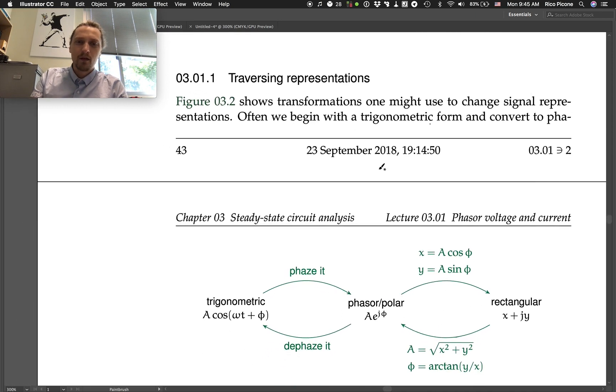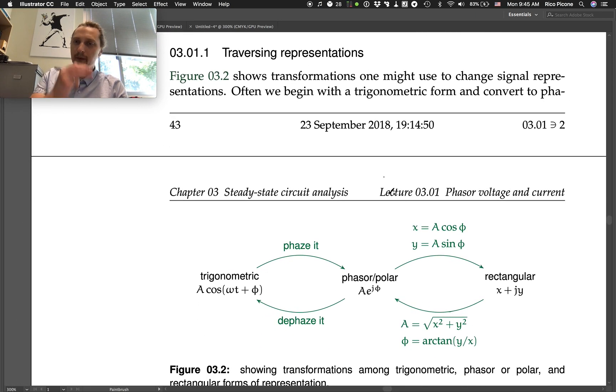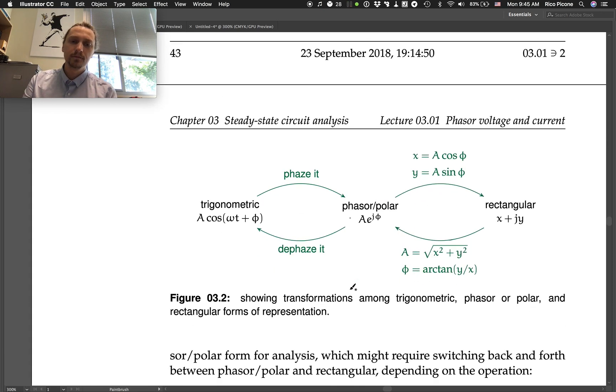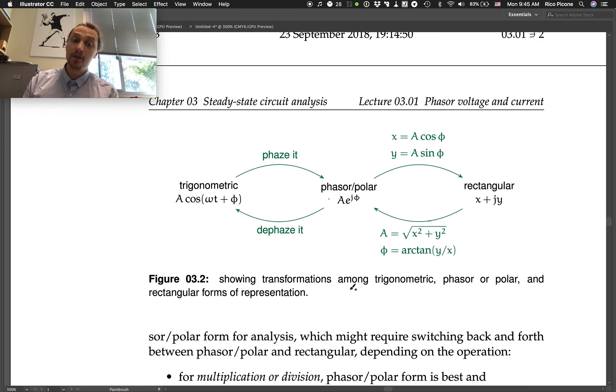Figure 3.2 shows transformations one might use to change signal representations. Often we begin with a trigonometric form and convert to a phasor form, also known as polar form for analysis, which might require switching back and forth between phasor and polar and rectangular, depending on the operation.